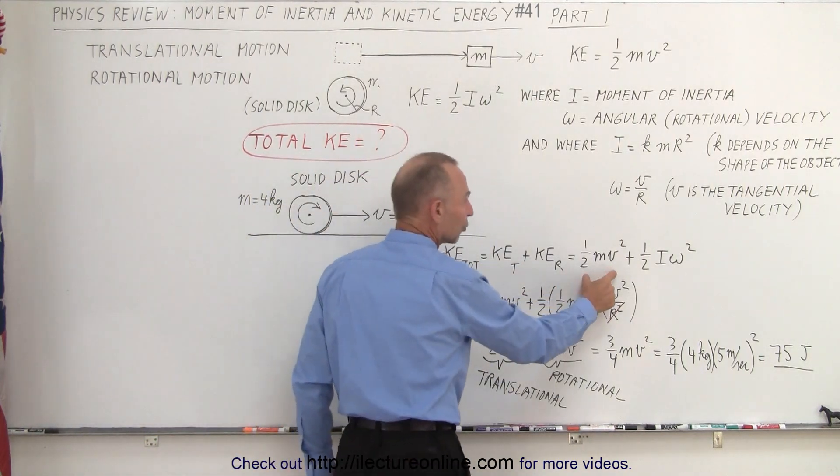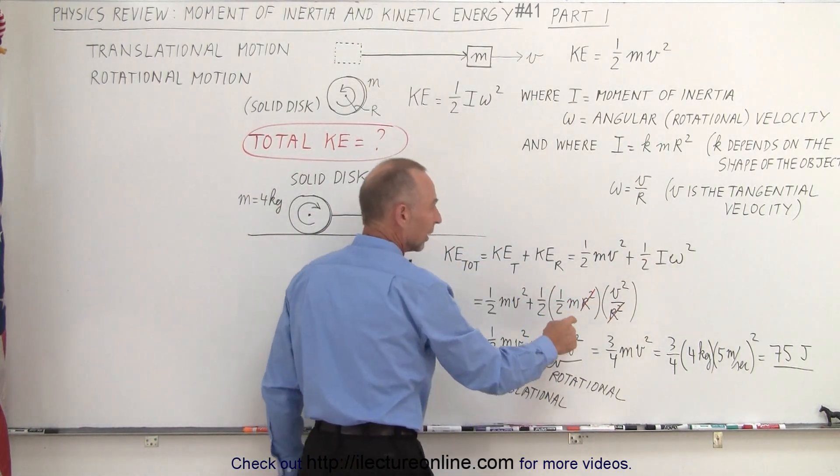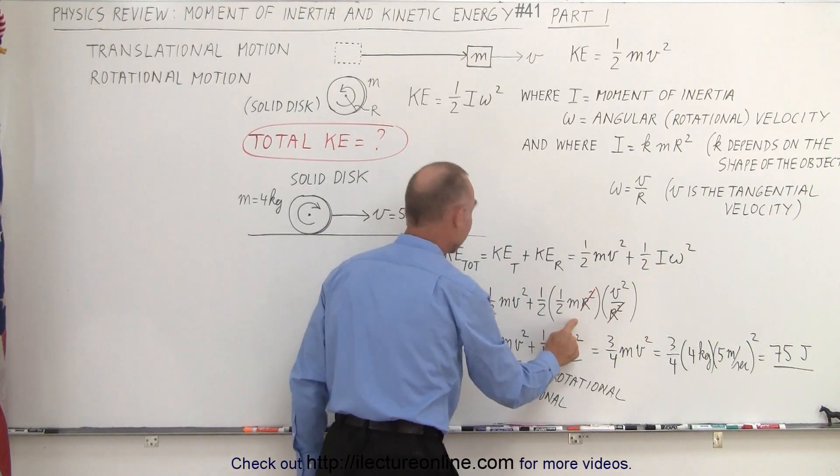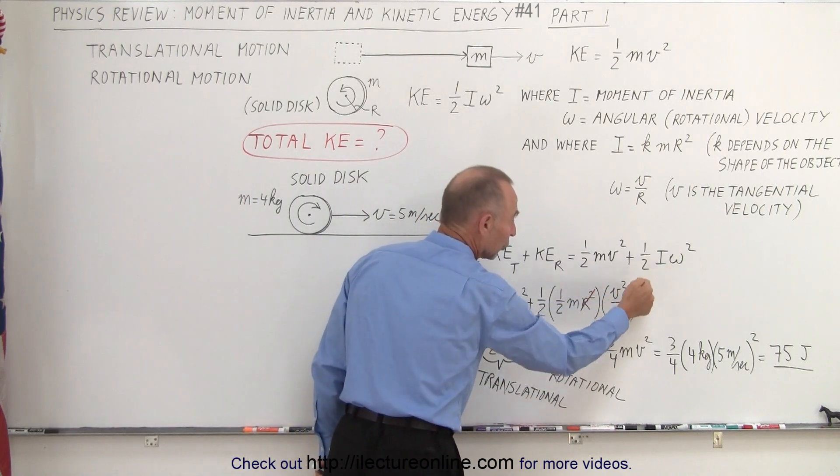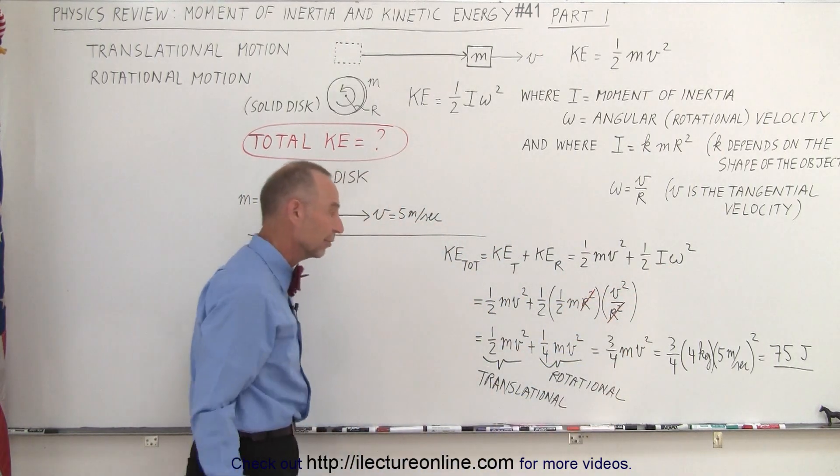So we add up one-half mv squared plus one-half I omega squared, of course then substitute for I what I is equal to in the case of a solid disk, and what omega is equal to, which is the translational velocity divided by the radius.